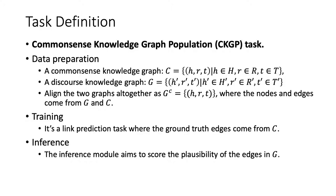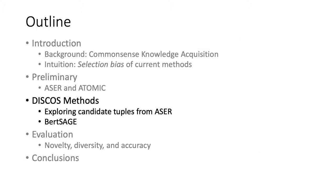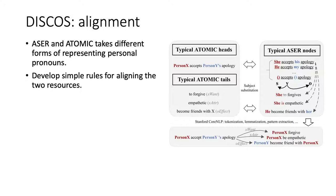In the inference process, we apply the above model to predict the plausibility of edges in G, the discourse knowledge graph Acer. Next, let's introduce the details of the Discourse framework. Remember that we first need to combine Acer and Atomic together to get a unified graph GC.